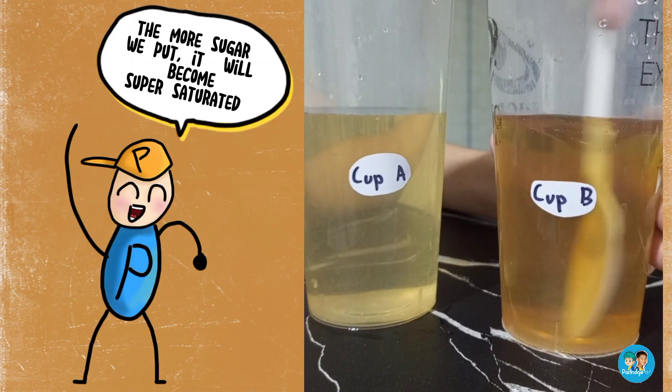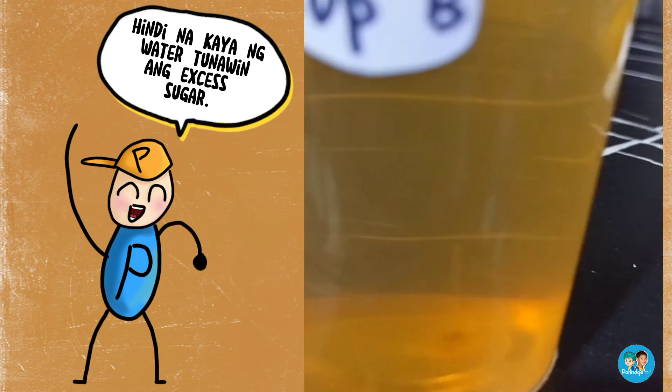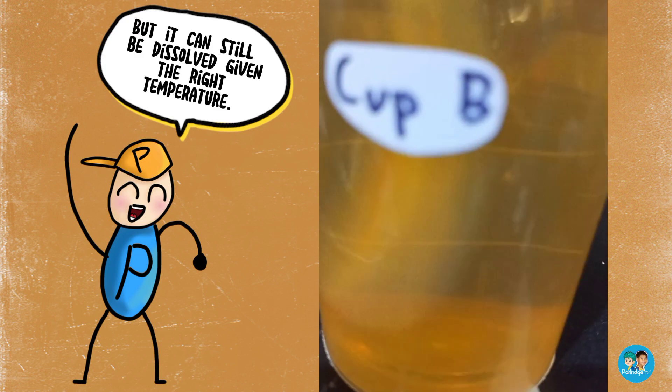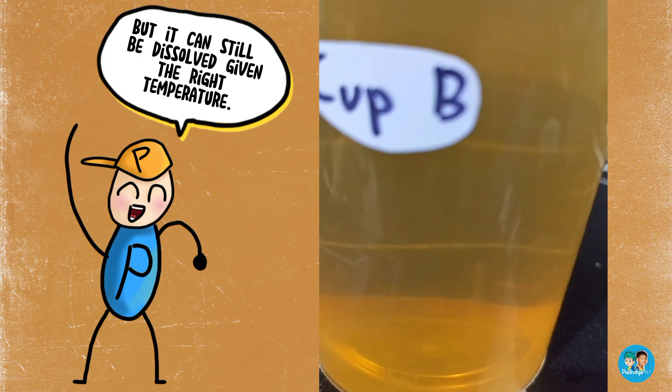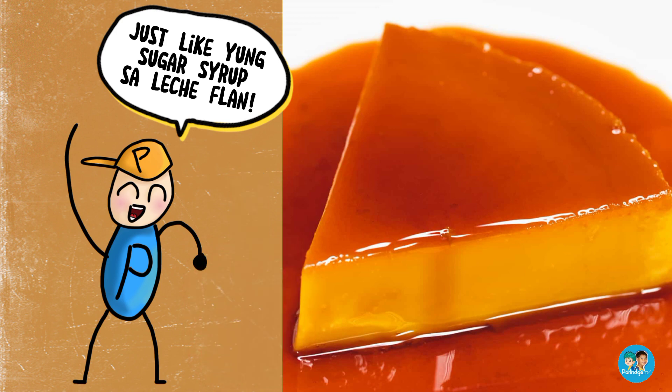The more sugar we put, it will become super saturated. Di na kaya ng water tunawin ng excess sugar. It has reached its limit or saturation point. But it can still be dissolved given the right temperature. Just like your sugar syrup sa leche flan.